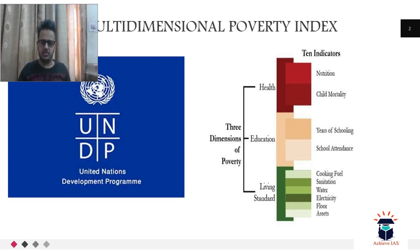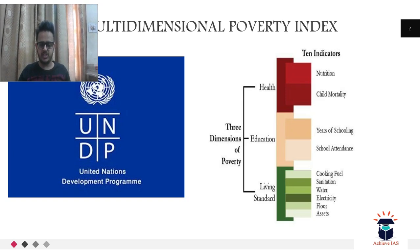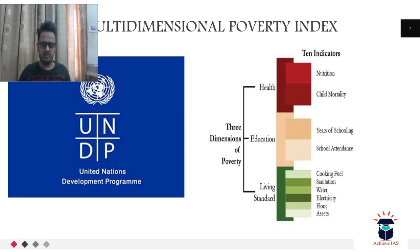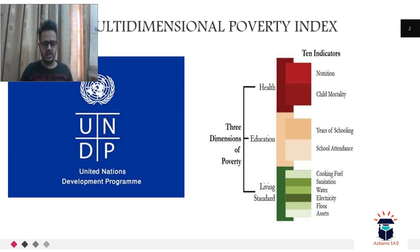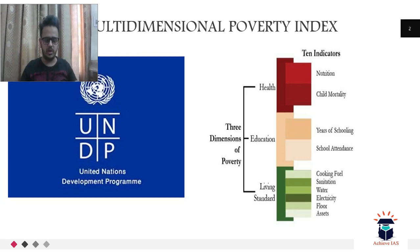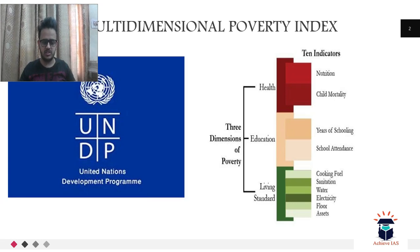The basic needs included are: health, nutrition, child mortality, education, years of schooling, school attendance, living standards, cooking fuel, sanitation, water, electricity, floor, and assets. This is how the United Nations Development Programme measures poverty. In 2018 it released its most recent report, so let's look at what the report says about the global scenario.